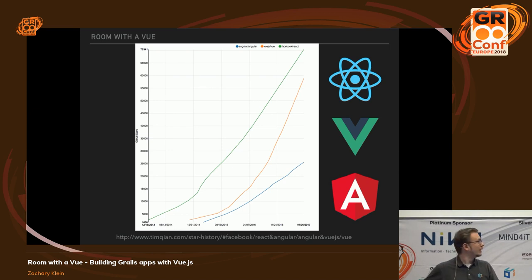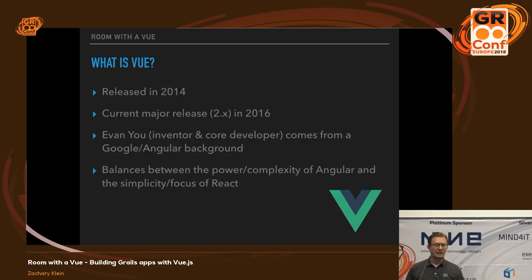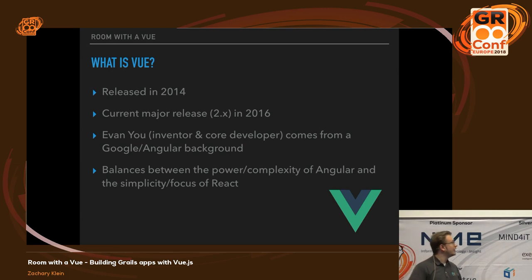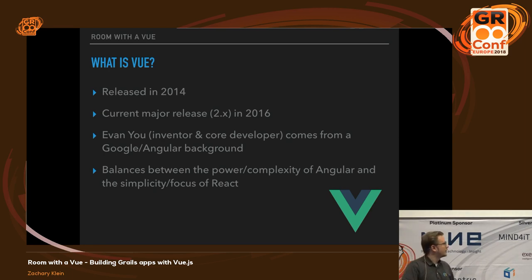I'll mention that I think Vue in many ways appeals more to folks who are accustomed to Angular versus React. Vue was released in 2014 — it's the newest of the big three — and the current major release came out in 2016. The inventor and still lead developer for Vue.js was an Angular contributor and developer. The simplest way to describe Vue is that it lands right in the middle of a spectrum with Angular on one side and React on the other.